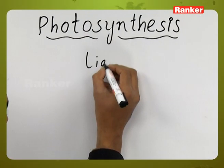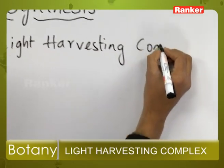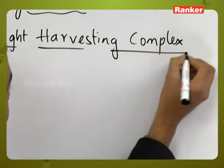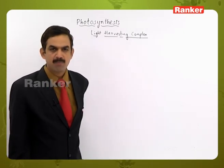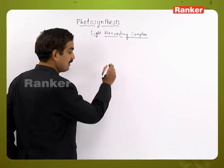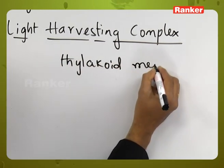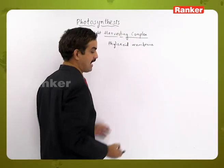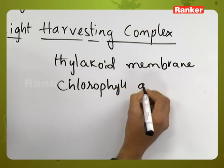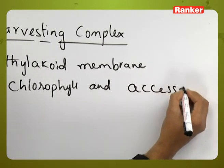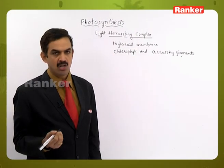The next one is a light harvesting complex. The antenna part, or the light harvesting complex, is formed by chlorophyll molecules and accessory pigments like carotenoids. This is present in the thylakoid membrane. These are made up of chlorophyll molecules and accessory pigments — carotenoids — which contain both carotenes and xanthophyll molecules.